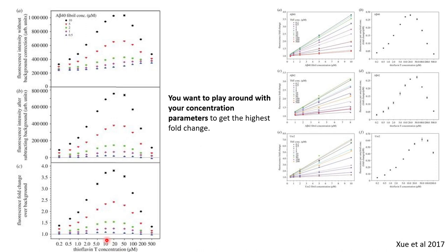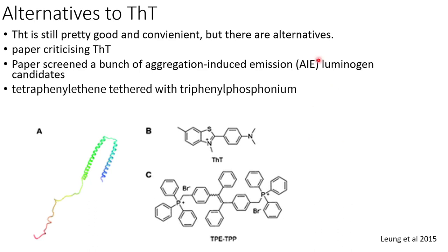When you do your experiments you want a big fold change because that's easier to - it's a clearer result, it's better for your data. So you want to pick the optimal ThT concentration that gives you the best fold change. And here in this figure they just did ThT aggregation with A-beta-40 fibrils.